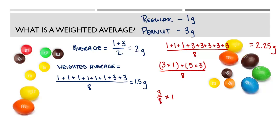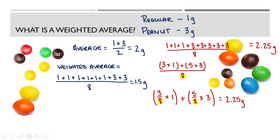Another way to represent this weighted average is using fractions: 3/8 of the sample has a mass of 1 gram, so (3/8) times 1, plus 5/8 of the sample has a mass of 3 grams, so (5/8) times 3, which also equals 2.25. Notice we didn't divide by 8 separately because we already incorporated it within the fractions.